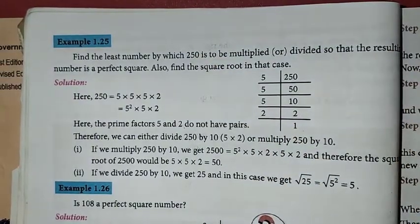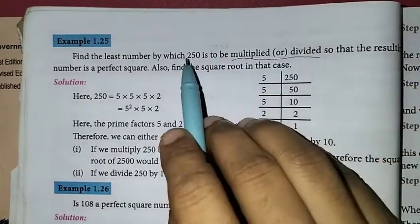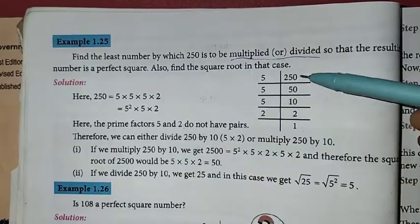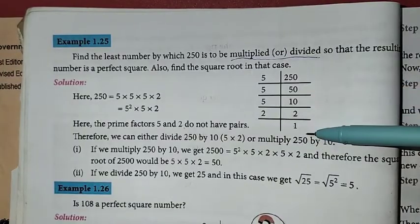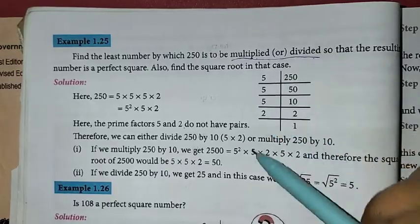Which number should be multiplied or divided to make it as a perfect square? This is prime factorization method. Which number should be added or subtracted? This is long division method.